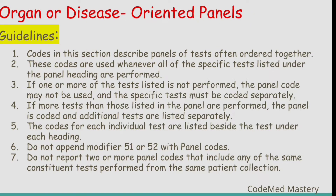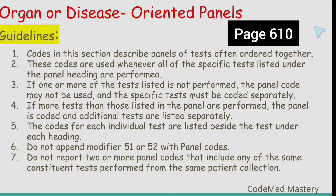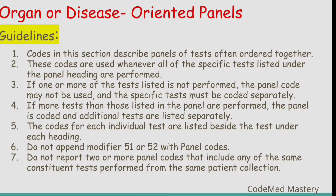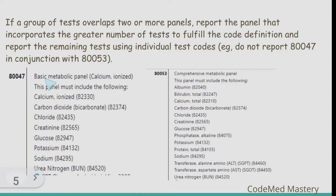Let us start with the guidelines for organ or disease oriented panels. The code range is 80047 to 80076. This is present in your CPT manual, Pathology and Laboratory section, page 610. The first guideline is that codes in this section describe panels of tests often ordered together.